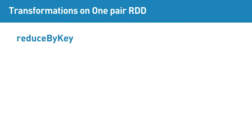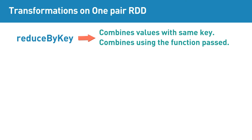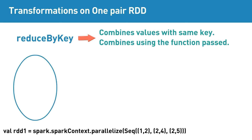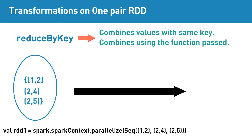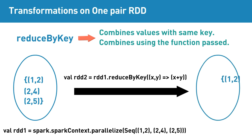reduceByKey is a pair RDD transformation that combines values with the same key. How it combines the values is based on the function that we pass to the reduceByKey transformation. For example, if the input RDD contains elements (1,2), (2,4), (2,5), then reduceByKey transformation to sum the values will return (1,2), (2,9) as the resultant RDD. The function to sum the values is passed to reduceByKey, which takes care of summing the corresponding values for each key.